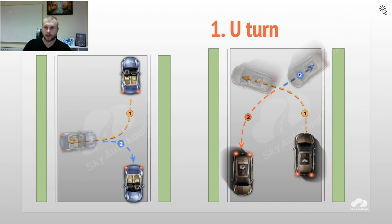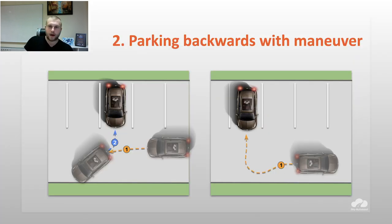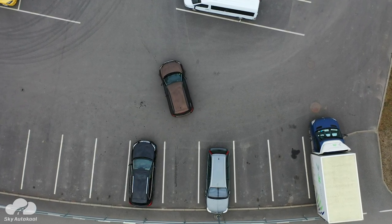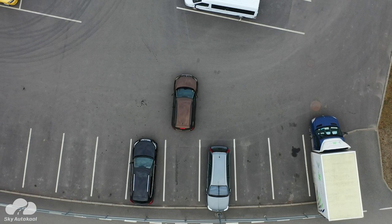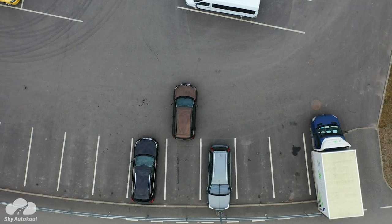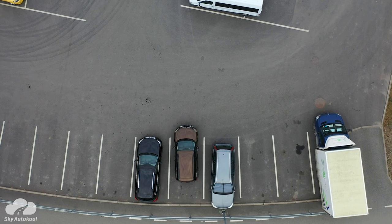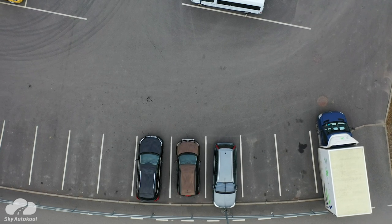The simpler option is: left, backwards, straight. Always show indicators during the exercises — first left, then right indicator, then left again. For parking backwards with maneuver, they want you to park at 45 degrees or 90 degrees. You cannot just see a parking spot in front and simply park there — that is not a maneuver.